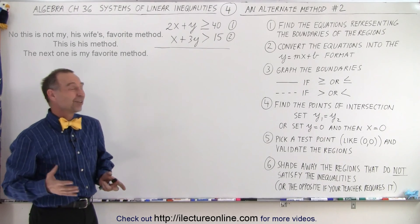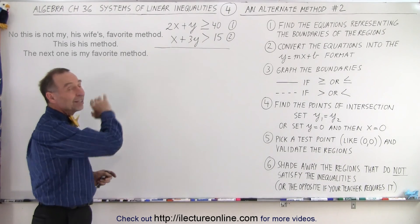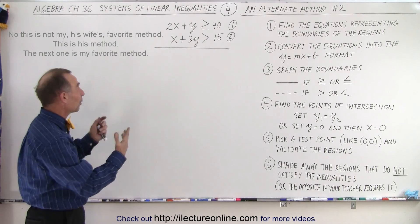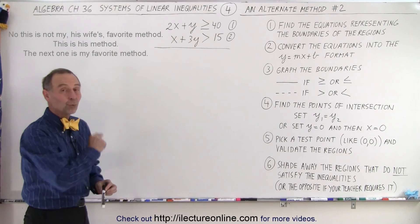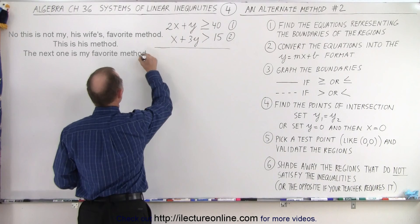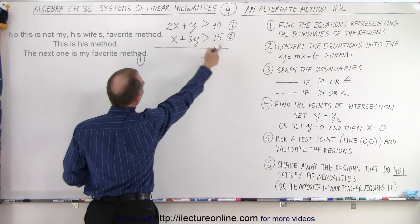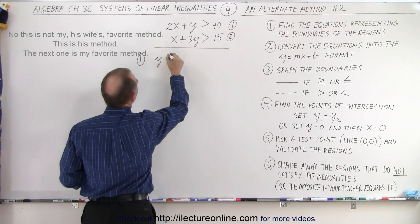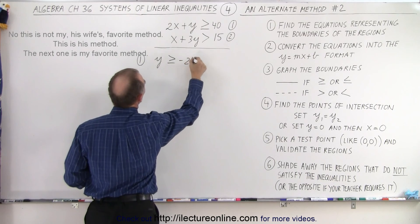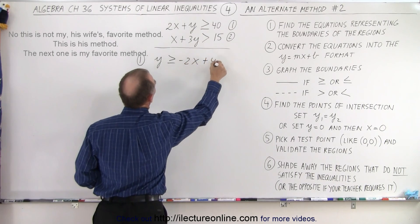So what she says: do not even bother writing the equivalent equations. Just leave the inequalities where they are and solve each one of them for y. So let's do that. On our first inequality, we move the 2x to the other side, so we get y is greater than or equal to -2x plus 40.